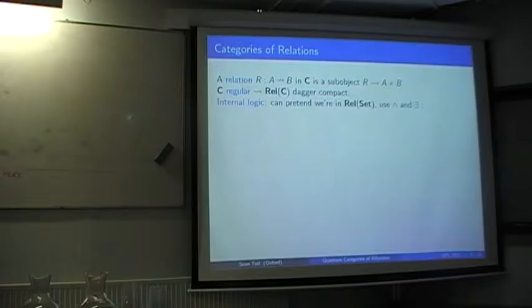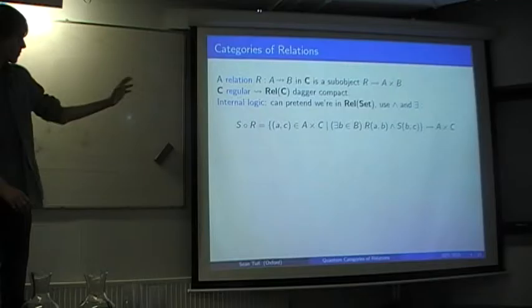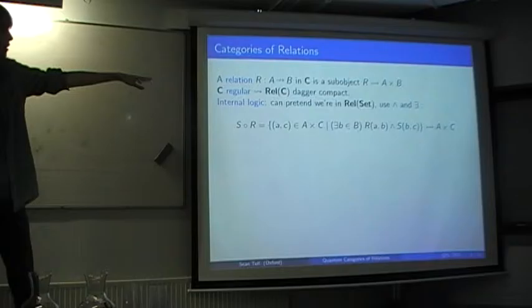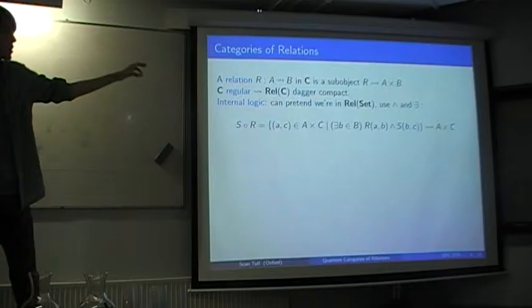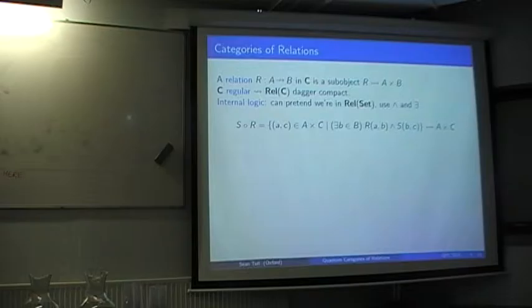It's not too enlightening to go through the precise definition of a regular category, but the interesting point is that they come with a notion of internal logic. This lets us essentially pretend we're working in the familiar category REL of sets and relations. In particular, we can use conjunction and the existential quantifier to build new relations from old ones and prove theorems just as if we're working in REL. For example, this is how we define composition of relations — it looks like a set-based definition but is really a precise specification of a new sub-object. Our arguments only need to use conjunction and the existential quantifier.